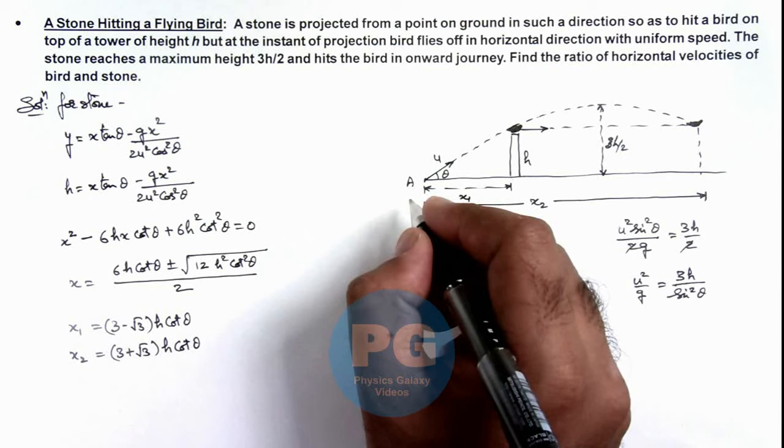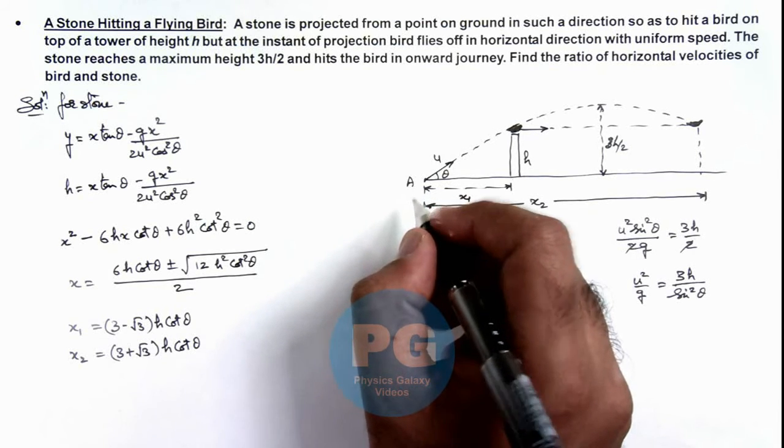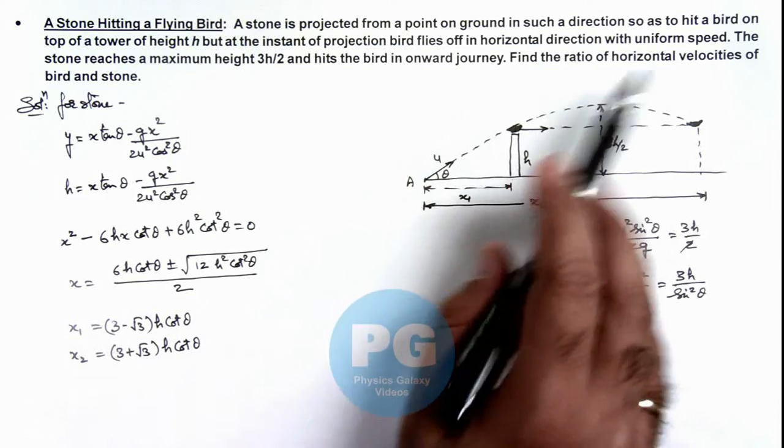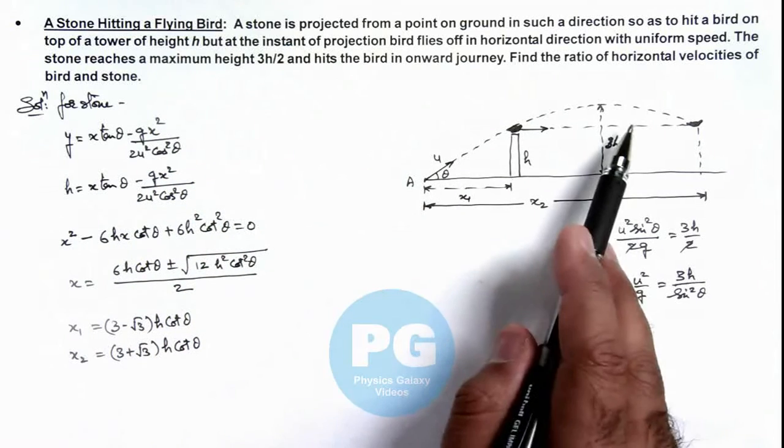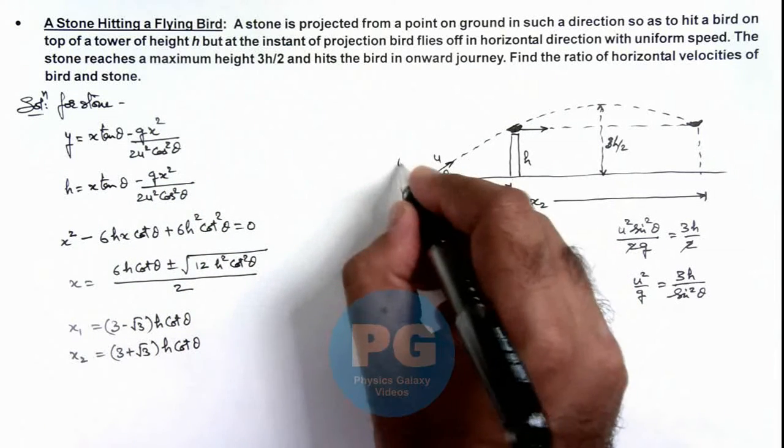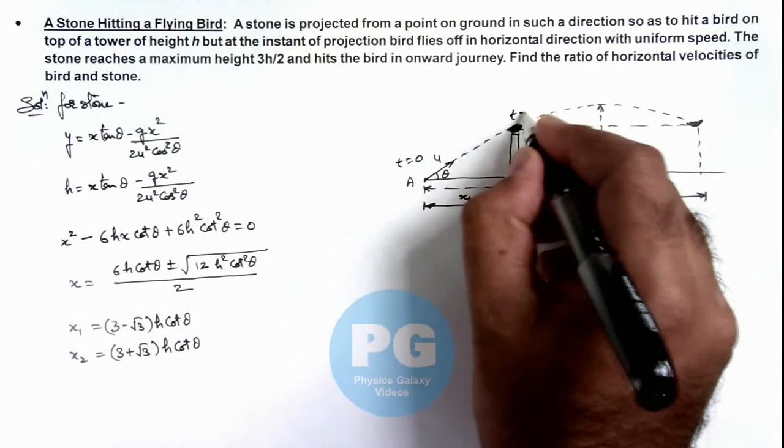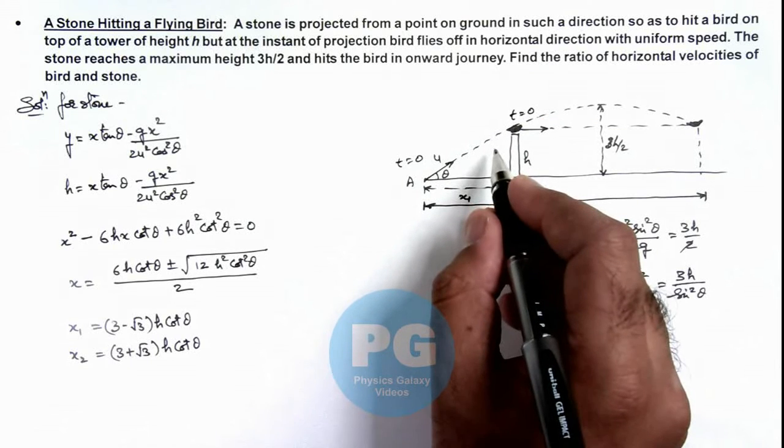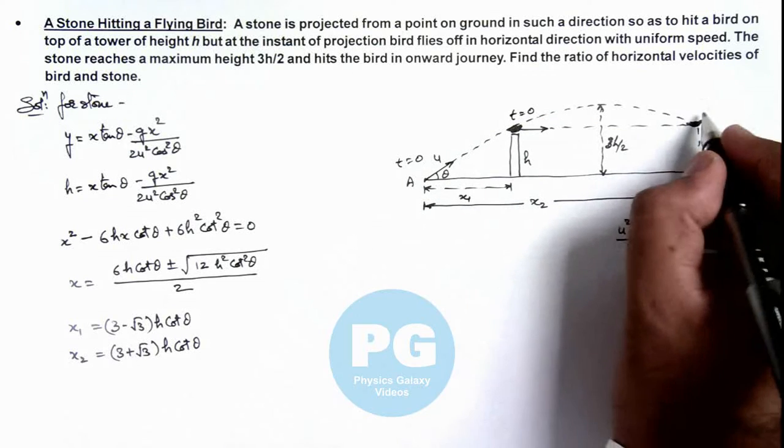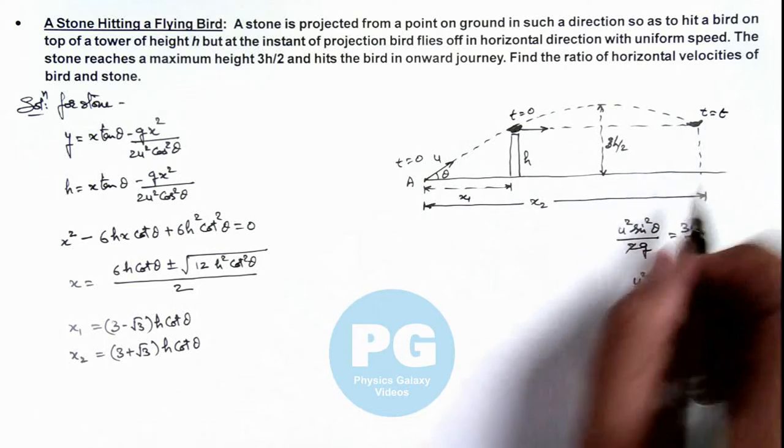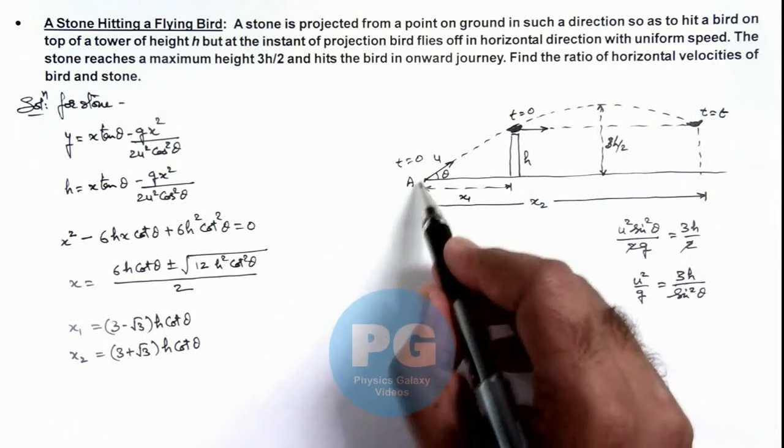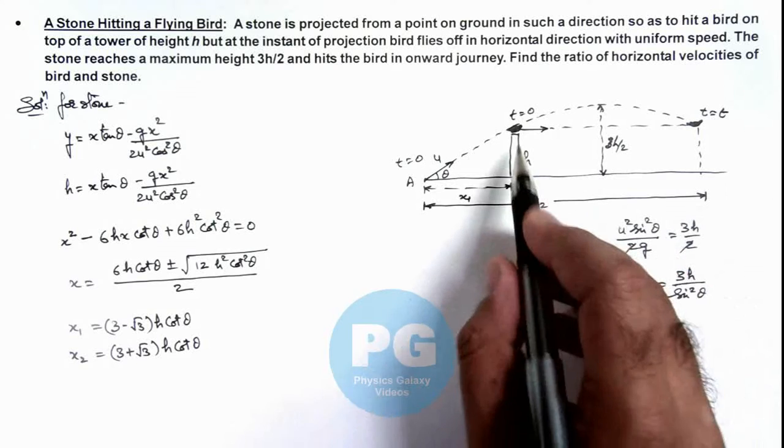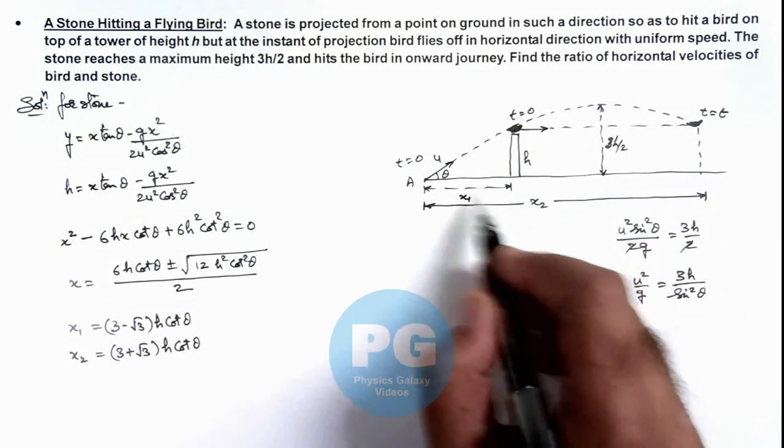If we talk about the projection time, we are given that the bird at the instant of projection flies off in horizontal direction. That means if at t = 0 the bird flies off as well as the stone is projected, then in time t, if the time elapsed up to the time of hitting is t, then in this time the stone has traveled a distance x₂ and the bird has traveled a distance x₂ - x₁.